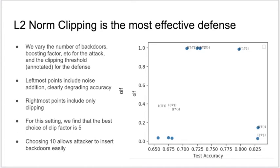This plot shows the differential privacy and L2 norm clipping defense evaluated against a range of boosting factors. Both defenses significantly mitigate the attack, but the L2 norm clipping defense is more effective at reducing the outsized impact factor without degrading validation accuracy.